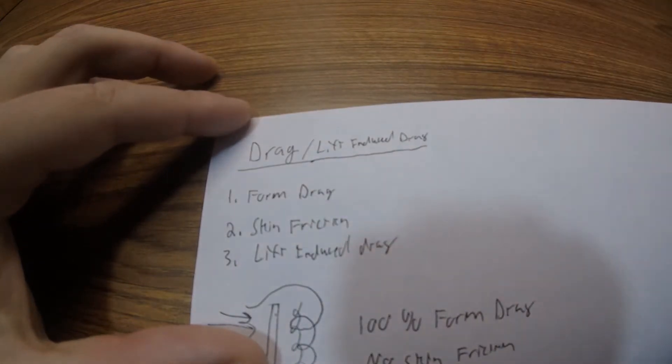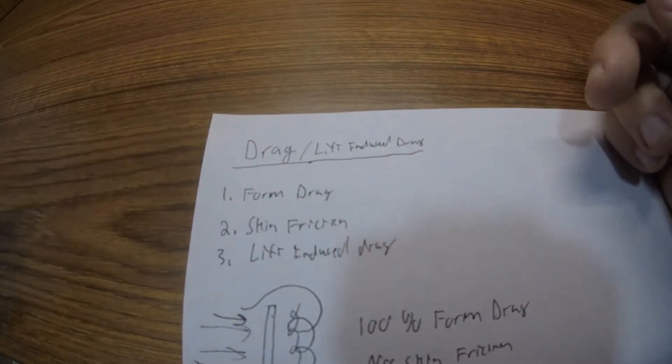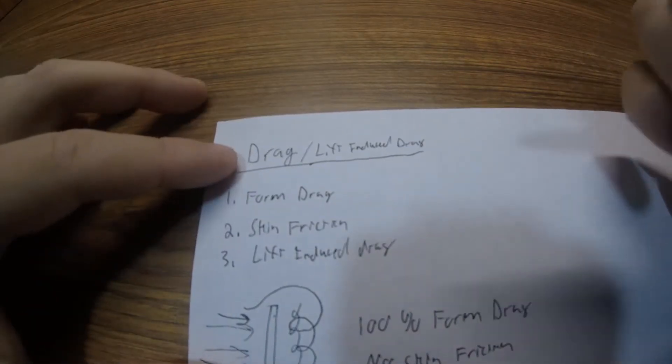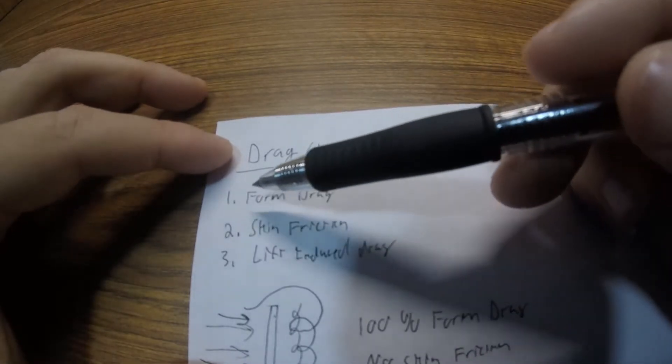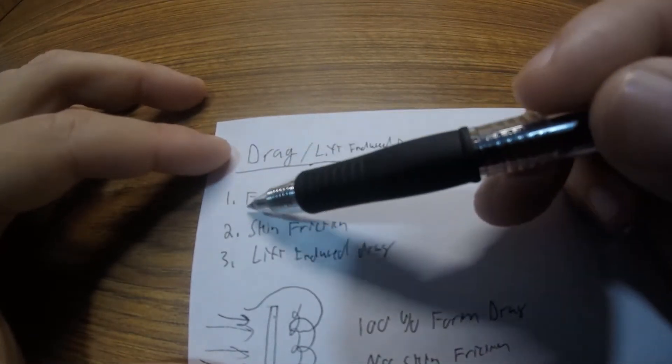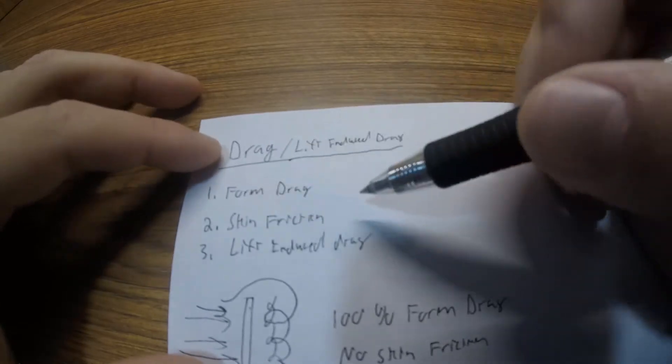But first, any body traveling through air, traveling through a liquid, can produce drag in a multitude of fashions. I would say the two most common that are most widely known would be form drag and skin friction drag.